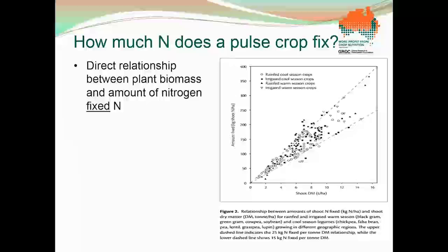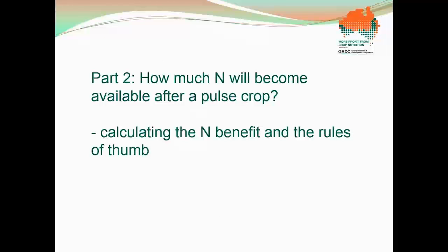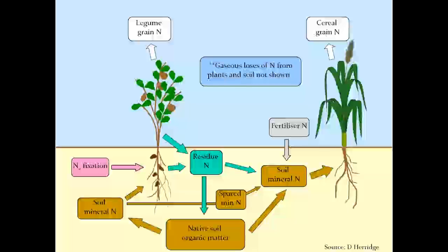Just to reiterate the effect of narrower row spacings that the Pulse Agronomy team have been showing — there seems to be a yield benefit from going to narrower spacings, even down to 0.25 of a metre, but maybe half a metre might be a good compromise in many situations. Nikki Seymour's team has shown higher fixation rates at the narrower row spacings as well, both in the percentage of nitrogen derived from the atmosphere and the total — almost a double benefit with yield and N fixation.